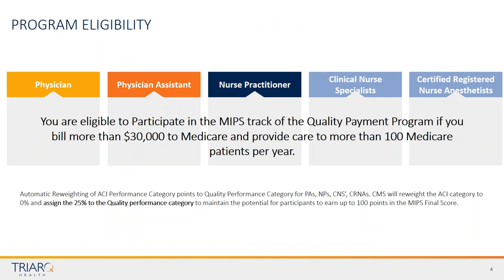Who's eligible? Eligible clinician types include physicians, PAs, nurse practitioners, clinical nurse specialists, and certified registered nurse anesthetists. You are required to participate if you bill more than $30,000 to Medicare and provide care to more than 100 Medicare Part B patients per year. If you're reporting individually and you're a mid-level provider — a PA, nurse practitioner, etc. — and you didn't traditionally participate in meaningful use, CMS will reweight your ACI category to zero and add those 25 points into the quality performance category.